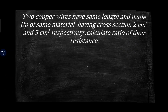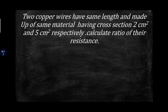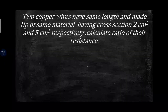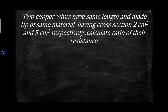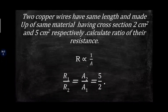Two copper wires having the same length and made of the same material have cross-sections of 2 cm² and 5 cm² respectively. Calculate the ratio of their resistance. Since resistance is inversely proportional to cross-sectional area, the ratio of resistance will be 5 is to 2.